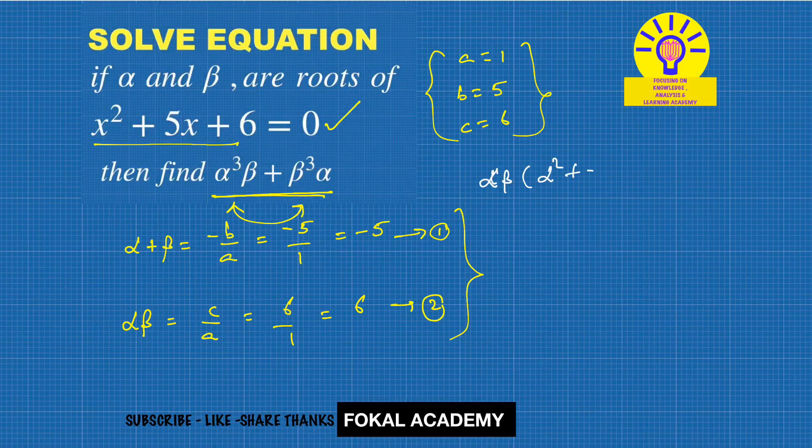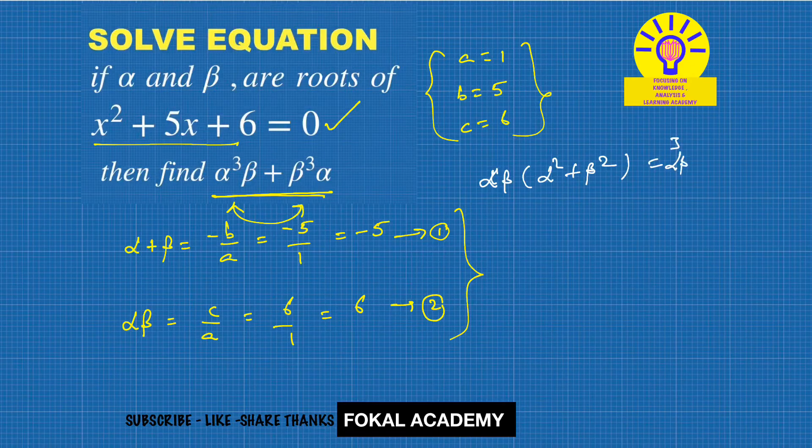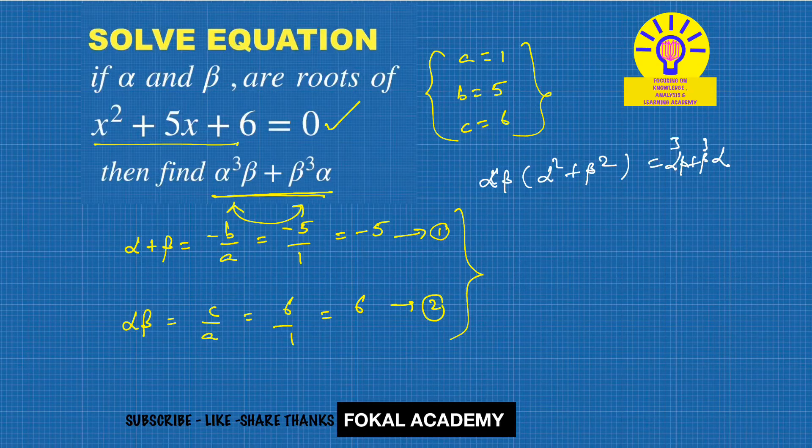αβ(α² + β²) equals α³β + β³α. But we know that α² + β² from the identity...